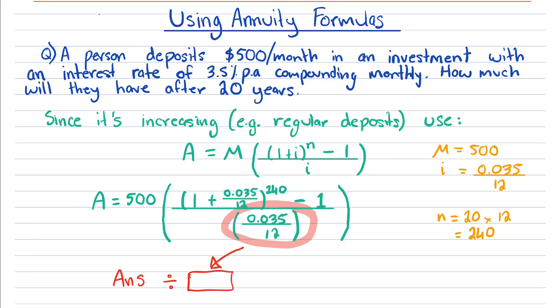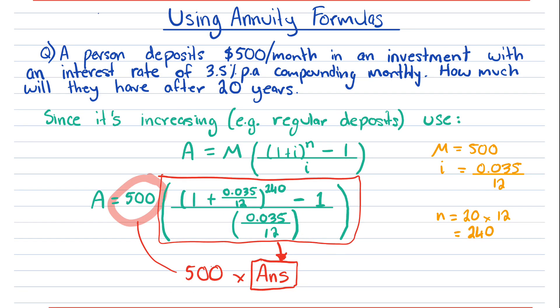Once you've got an answer stored, you can divide that answer by the bottom line. Then, once you've got that answer stored, you can multiply the whole thing by 500.